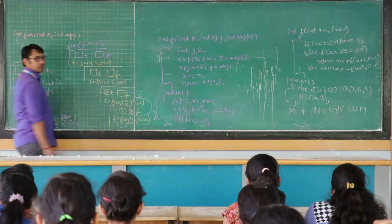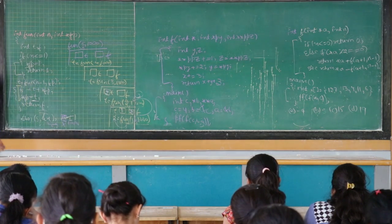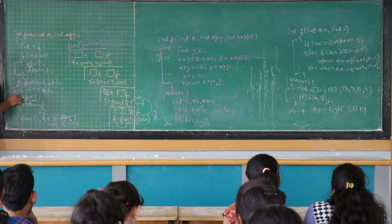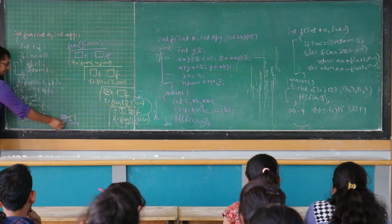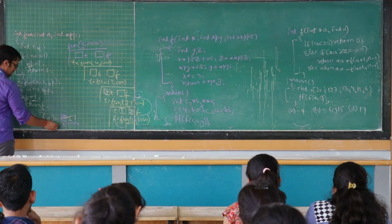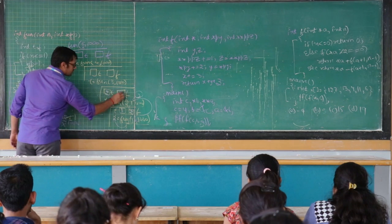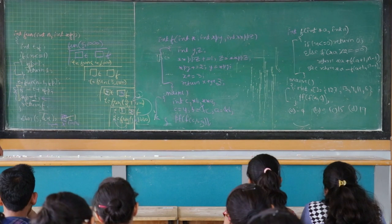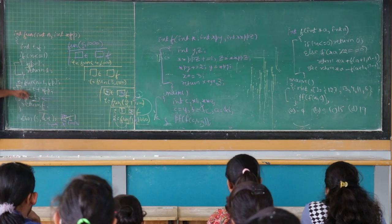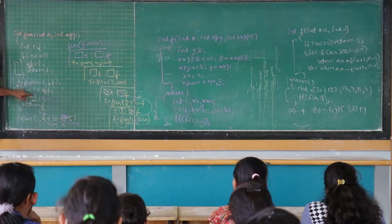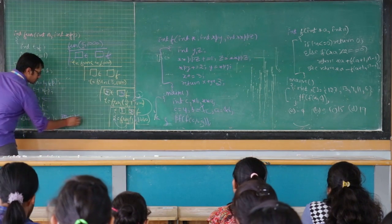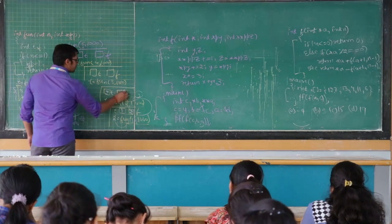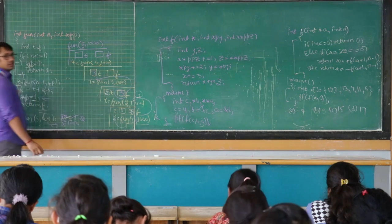So this t is going to store 2. Now when the value of t is 2, it is going to execute these statements where f is equal to t plus *fp. *fp is 1, so 1 plus 2 is 3. Then it executes *fp is equal to t, meaning the value of t, which is 2, will be stored. Then again return f, so f value is 3, and 3 will be stored — this t is going to store 3.